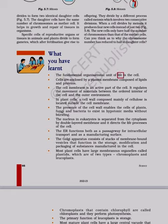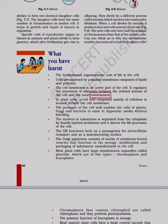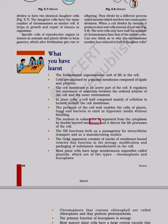What you have learned: The fundamental organizational unit of life is the cell. Cells are enclosed by a plasma membrane composed of lipids and proteins. The cell membrane is an active part of the cell — it regulates the movement of materials between the ordered interior of the cell and the outer environment. In plant cells, a cell wall composed mainly of cellulose is located outside the cell membrane. The presence of the cell wall enables the cells of plants, fungi and bacteria to exist in hypotonic media without bursting. The nucleus in eukaryotes is separated from the cytoplasm by a double-layered membrane and it directs the life processes of the cell. ER functions both as a passageway for intracellular transport and as a manufacturing surface.